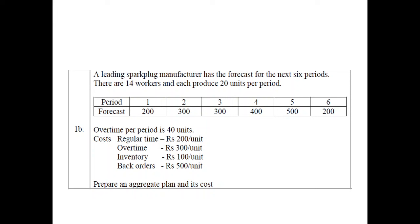Good morning students. Today we are going to learn about one important numerical problem on aggregate planning. The given problem is: a leading spark plug manufacturer has a forecast for the next six periods. There are 14 workers and each produces 20 units per period. The company is manufacturing spark plugs and for six months they have made a forecast of demand.